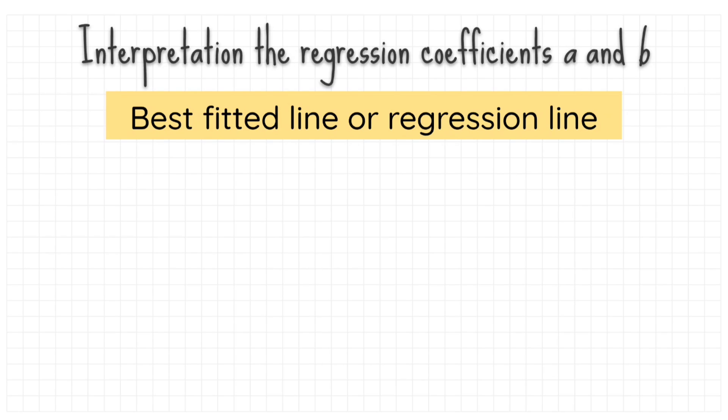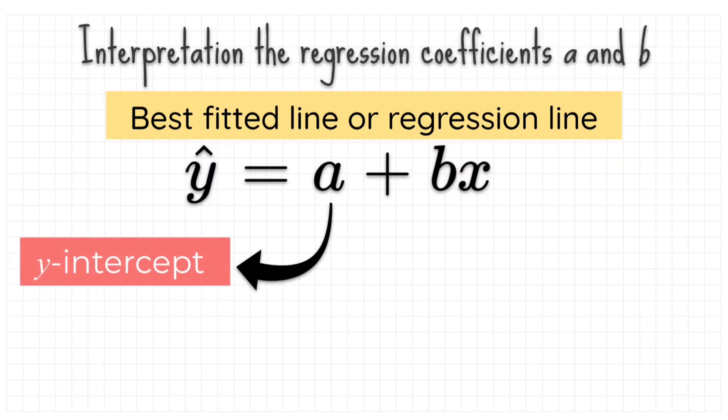Interpretation the regression coefficient a and b. The coefficient a and b can be found from the best fitted line or the regression line: y equals to a plus bx. A is the y-intercept of the line, represent the point where the line intersect y axis. This means when x equals to 0, y equals to a unit.